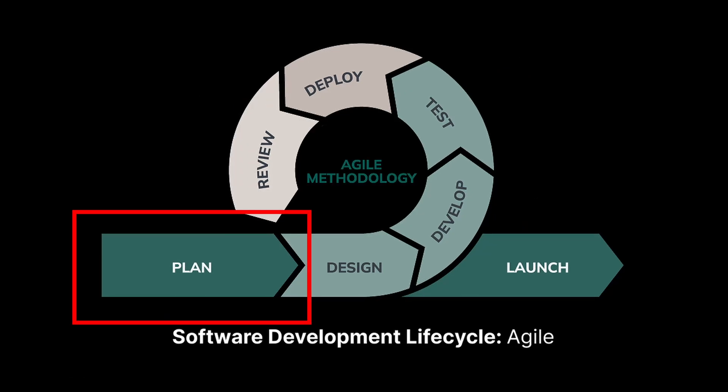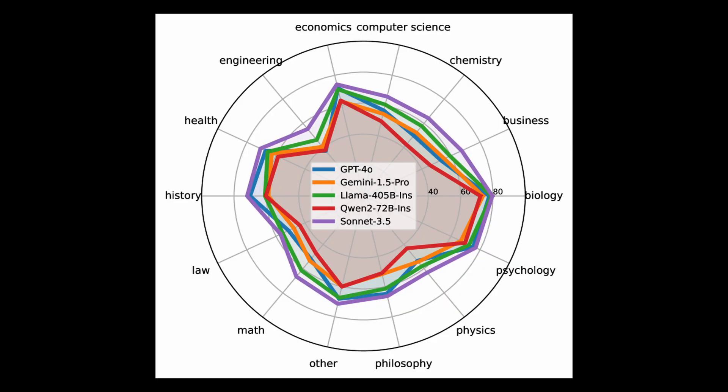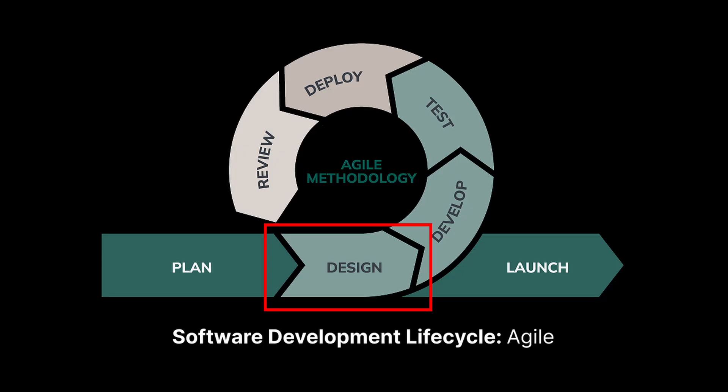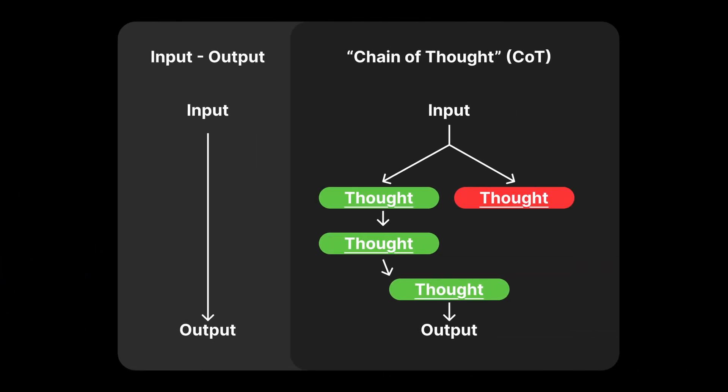When you're starting a new project, it can be tempting to always reach for the top shelf in popularity, but you want to find a model that has a strong knowledge base to understand domain-specific business requirements. During the design phase, picking models with strong chain of thought and reasoning can help make solid architectural decisions.